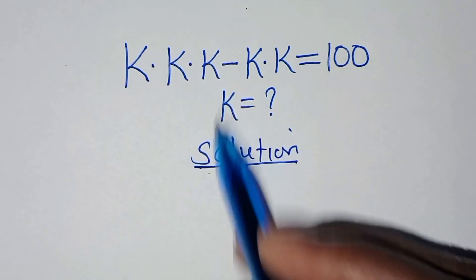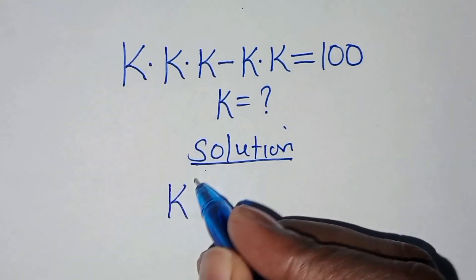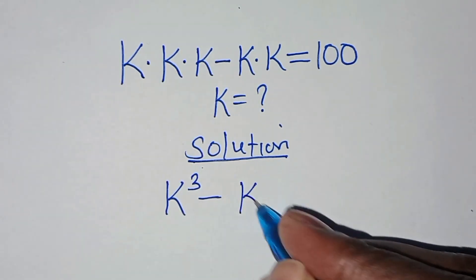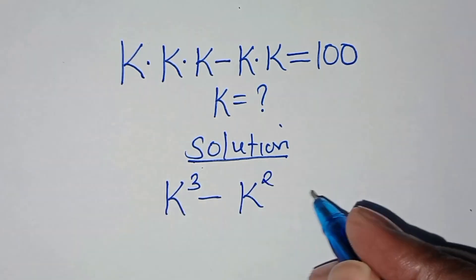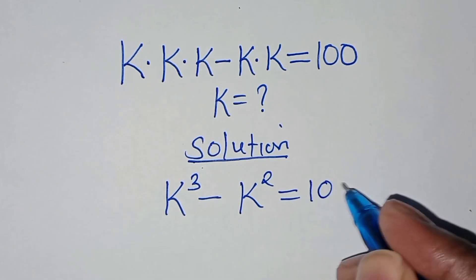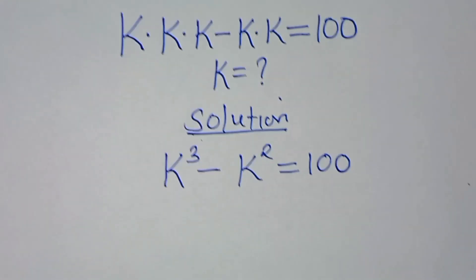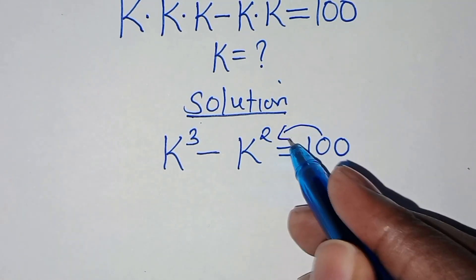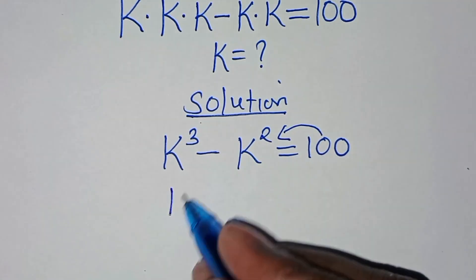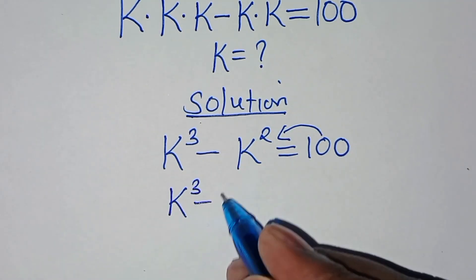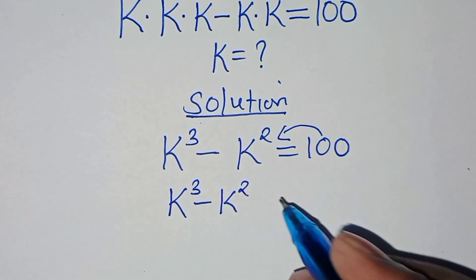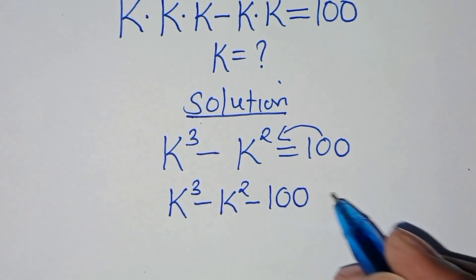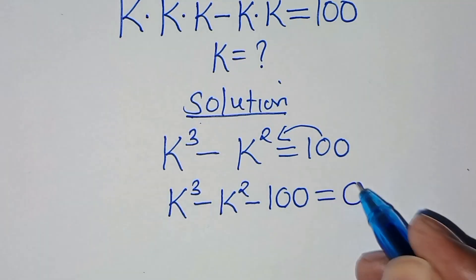From here we have k times k times k, which is k to the power 3, subtract k times k, which is k squared, equal to 100. Taking 100 to the left hand side, we have k³ minus k² minus 100 equals 0.